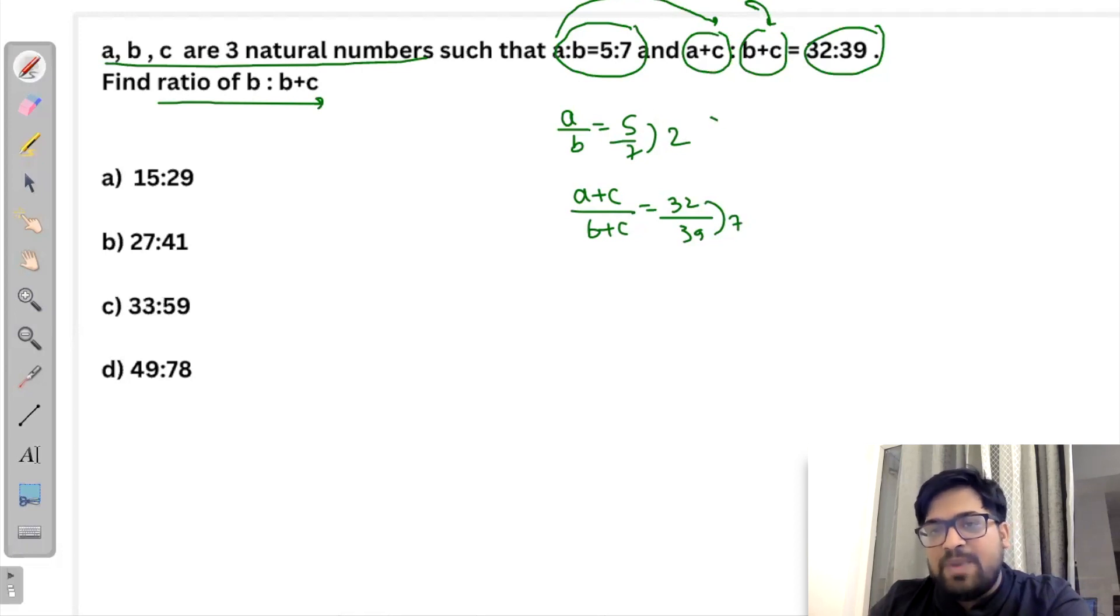Yahaan par isko 7 se multiply kera do and isko 2 se multiply kera do. Make difference same. 7 into 5, 35 is to 49. Yahaan par agar ho ga 64 is to 78. Now the difference here is 14, difference here is 14. Now we will get the value of C.